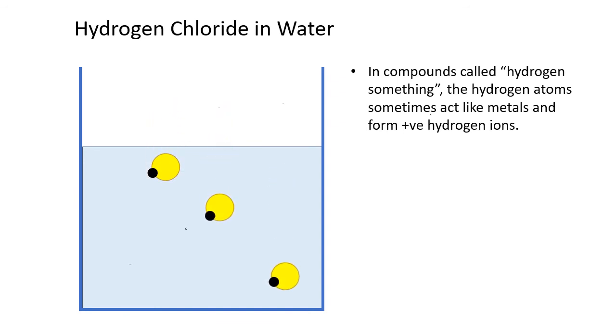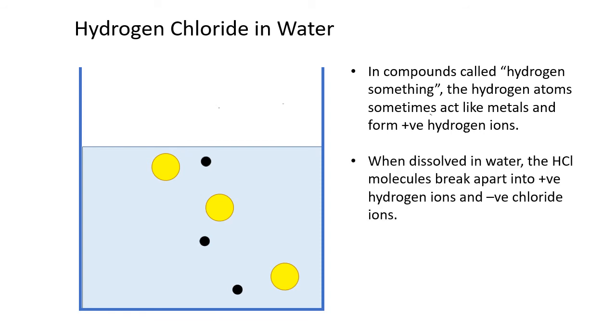When our hydrogen chloride molecules are dissolved in the water, they dissociate. The chlorine atoms take the electron from the hydrogen, and we get separate positive hydrogen ions and negative chloride ions floating around in the water. The black dots are the hydrogen ions. The yellow dots are the chloride ions.